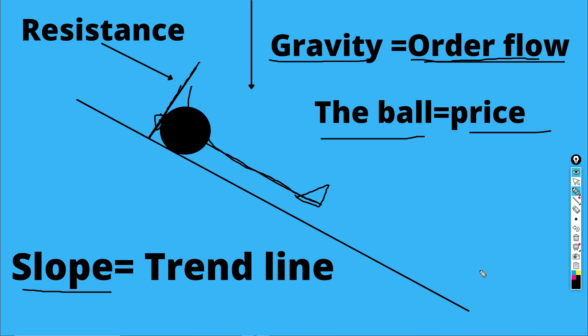So pay attention — your trading will change from today if you try to understand this. When you are learning this pattern, confirm a few things. First: which way is the gravity, or the order flow? Order flow must be along the direction of the trend. Number two: which way is the slope — that means which way is the global trend? The trend is very very important.